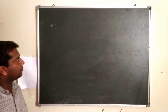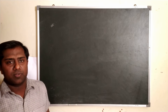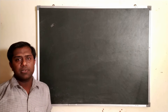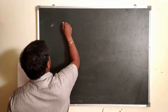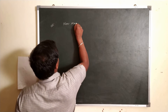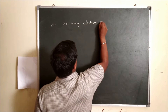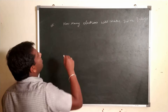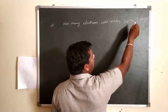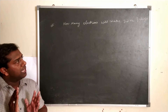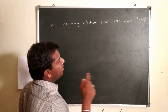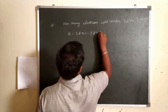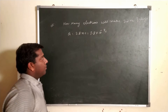Now we have our first numerical. You can try numericals from any textbook — NCERT or any publisher. First example: How many electrons will make 3.2 nanocoulombs of charge? Given: Q = 3.2 nanocoulombs = 3.2 × 10⁻⁹ Coulombs.